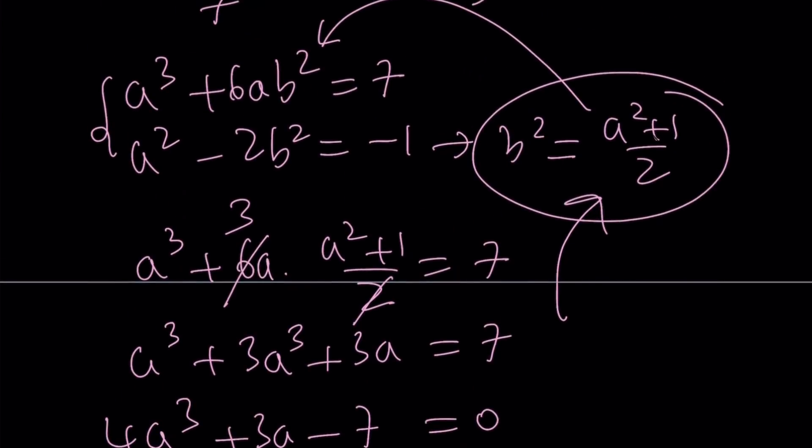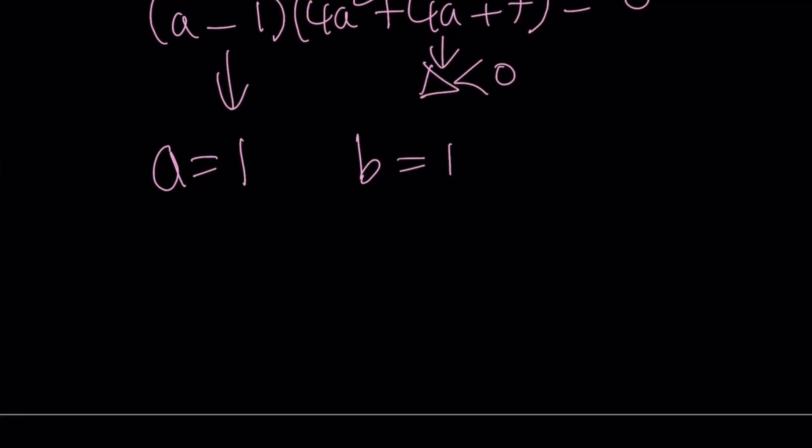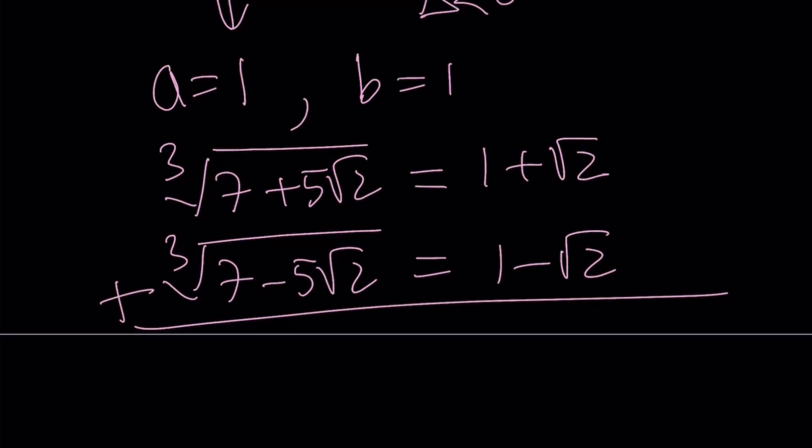Some of you are saying b can also be negative 1 but it just doesn't work. If b is negative 1 in this system it works but with the other one it just doesn't work. So did we have to check that? You can easily check that. But a equals 1, b equals 1 gives us something super important because remember our assumption was that the cube root of 7 plus 5 root 2 equals a plus b root 2 which means that it's going to be 1 plus root 2. And as a consequence the cube root of 7 minus 5 root 2 is going to be 1 minus root 2. If you add these guys up you're going to get the answer and that is going to be 2.